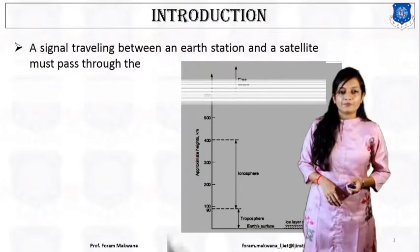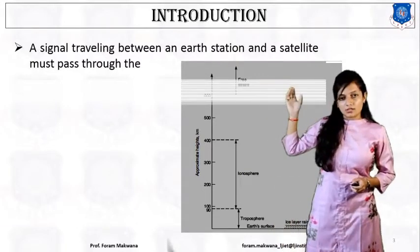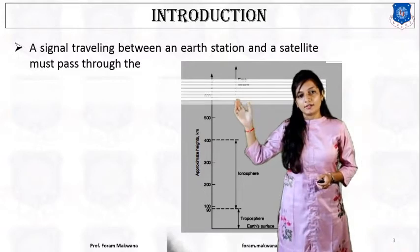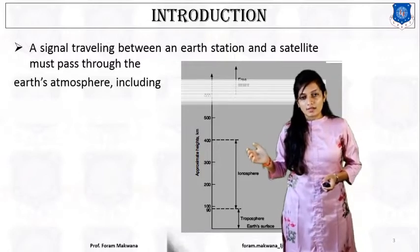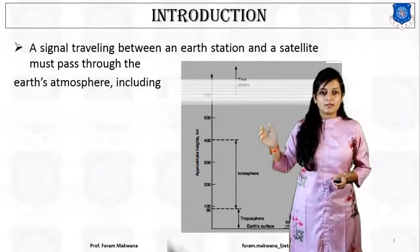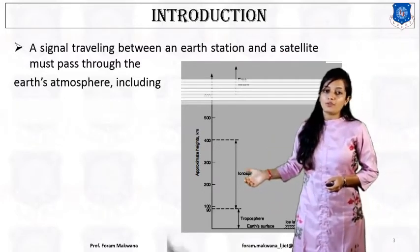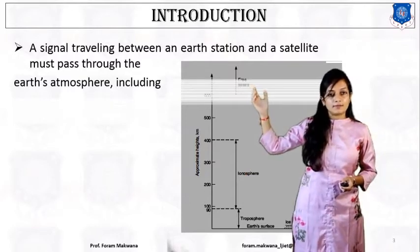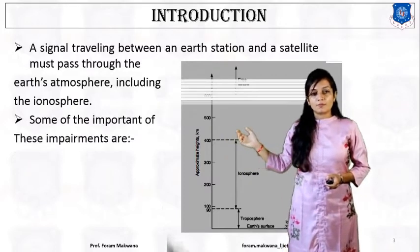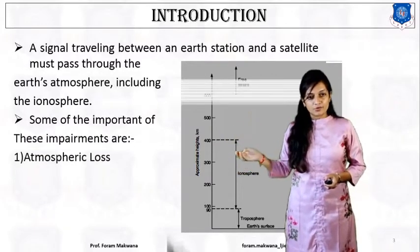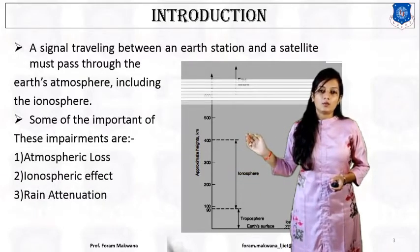Starting from the introduction: as my signal is traveling between the earth station and the satellite, it must pass through the earth's atmosphere. The earth's atmosphere has different layers — like the troposphere, ionosphere, and free space. Some of the important impairments are atmospheric loss, atmospheric effect, and rain attenuation.